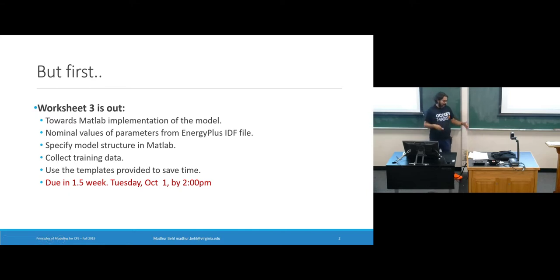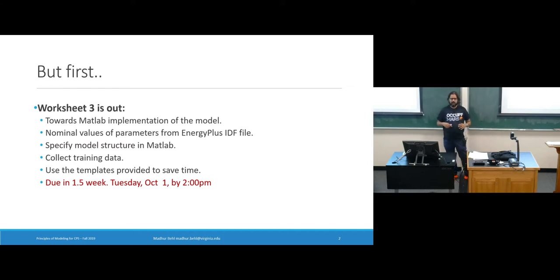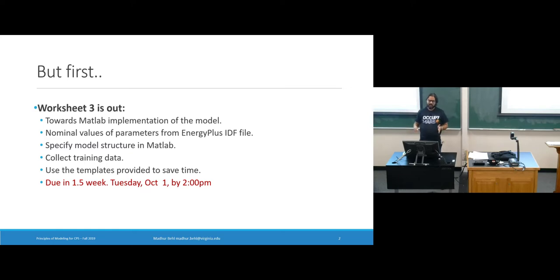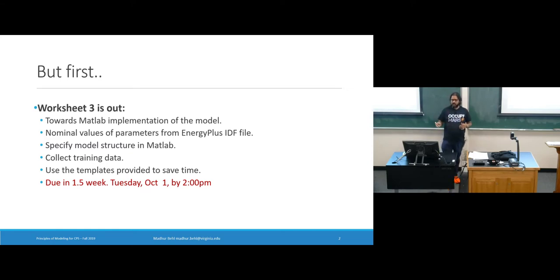The starting point is EnergyPlus. You have to estimate the nominal values of the parameters from the IDF file — go back, look at the external wall, every surface, every window, look at the layers, estimate the thermal mass where it makes sense, the conductivity where it makes sense. We've covered all of that. There's also some extra credit if you can actually run EnergyPlus, whether using the built-in tool or the native application on your OS, with questions on how you'd change a schedule to match something.